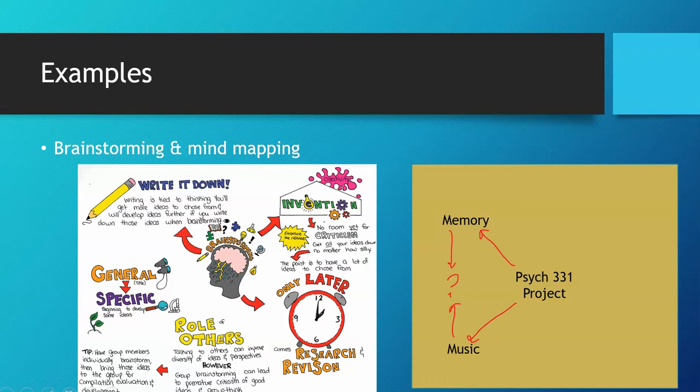So mind mapping can be used to find relationships between different sources, build relationships between different things that they've learned in class, create relationships between what they already know and the new content. There's a lot of ways that you can use mind mapping and it helps make their thinking visible for you to give feedback on.